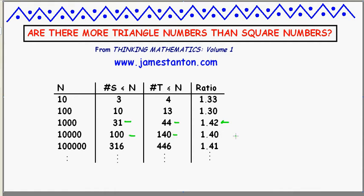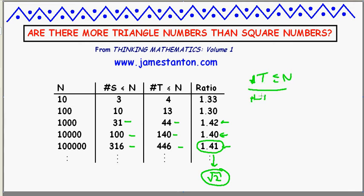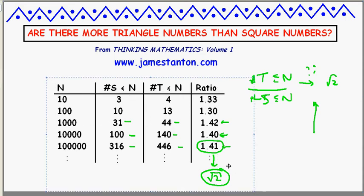Up to 10,000 there are 100 square numbers versus 140 triangle numbers, ratio of 1.40. Up to 100,000: 316 versus 446, ratio of 1.41. And it seems that this ratio is converging to some value. If you had to make a guess, 1.41 — most people start to think that looks very much like the square root of 2. So I'm wondering if this ratio of the number of triangle numbers less than or equal to n to the number of square numbers less than or equal to n wants to become the square root of 2. In fact, this is indeed true. And let me prove it — that's the point of this video. Let's prove that in this particular context, there are root 2 more triangular numbers than there are square numbers.